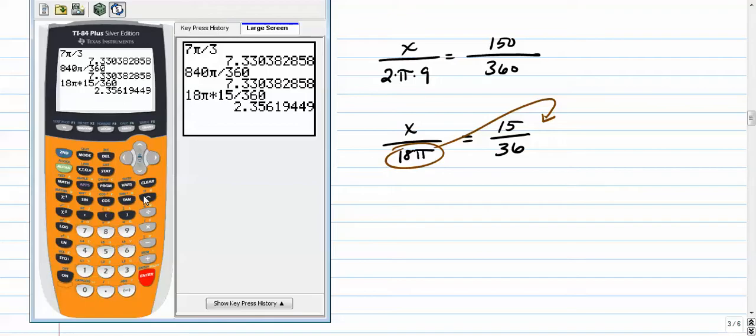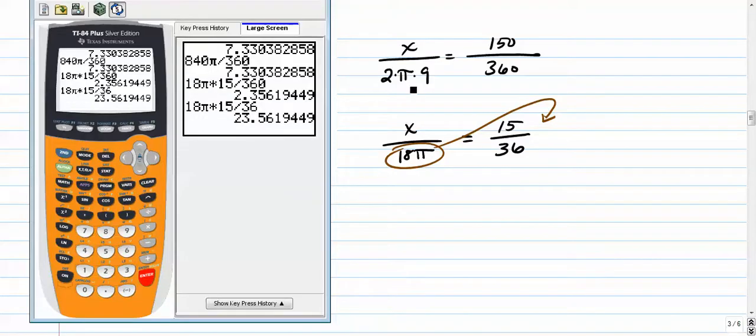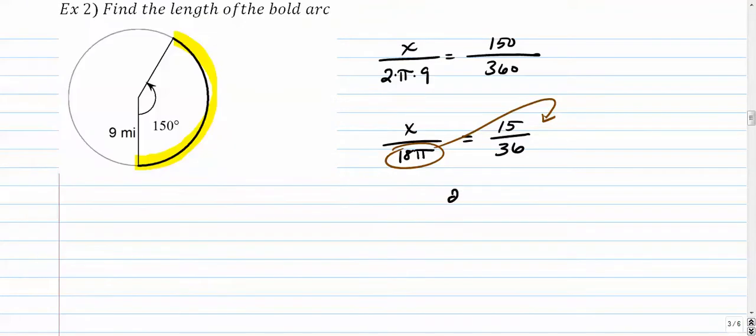I did that wrong, try that again. 18 times π times 15 divided by 36. Sorry about that. 23.562, that's in miles. That's quite a distance. That's how long it would take you to walk from here all the way around to here. That's almost a marathon.